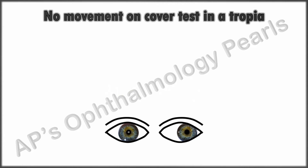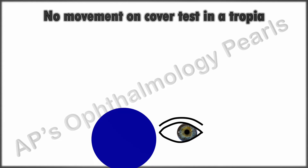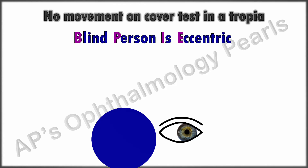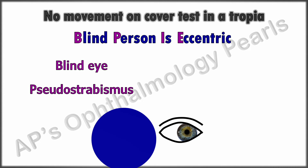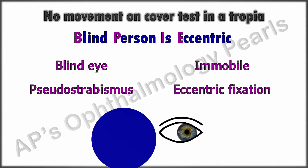What about the scenario in which there is no movement on cover test in a tropia? The causes can be remembered by the mnemonic 'BPIE': B stands for blind eye, P for pseudostrabismus such as high or negative angle kappa or nasal bridge abnormalities, I for immobile such as in a severe restrictive strabismus, and E for eccentric fixation.